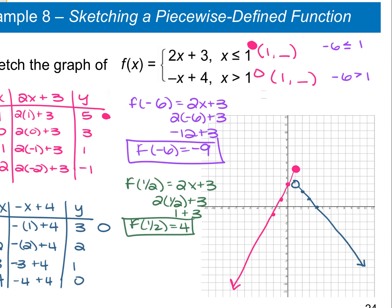For f(9): 9 is greater than 1, so we use -x + 4. That gives us -(9) + 4 = -9 + 4 = -5. So f(9) is equal to negative 5.